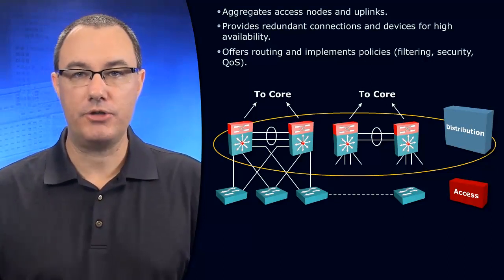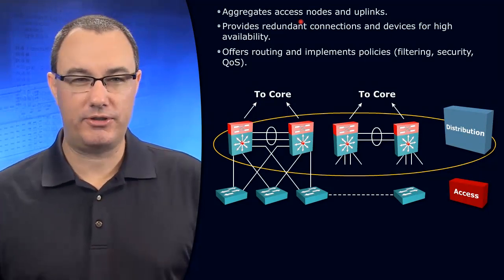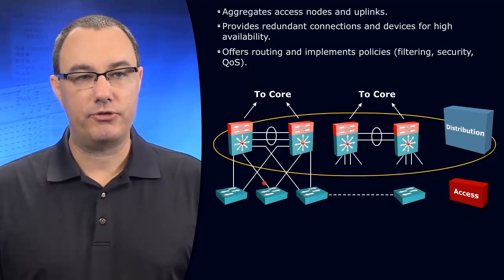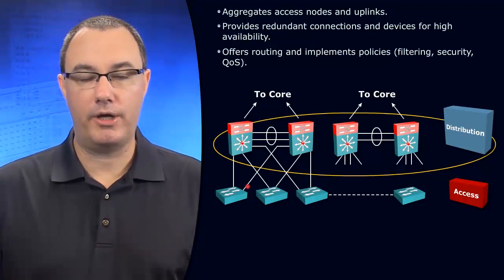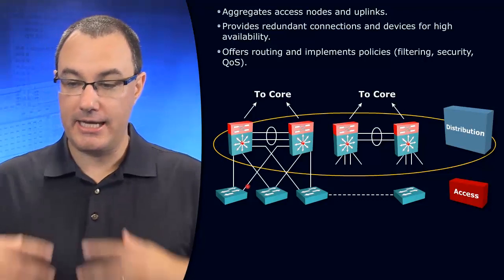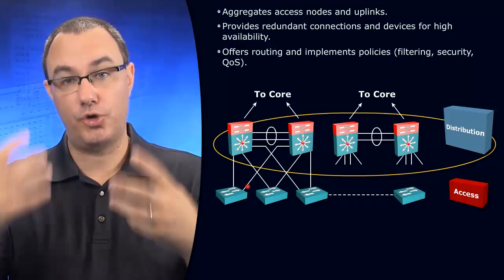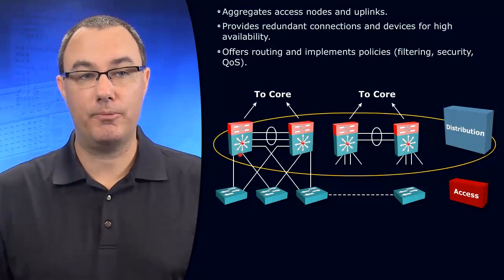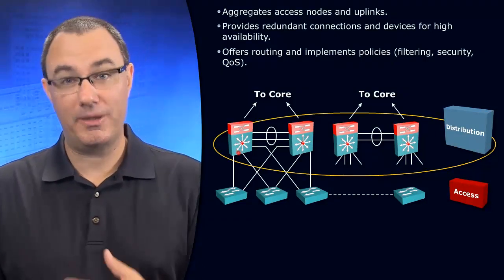When we talk about the distribution layer, it aggregates nodes and uplinks. What does this really mean? It means that we've got our VLANs that run at the access layer - that's a broadcast domain - and that broadcast domain has to terminate somewhere. It terminates on the distribution layer in such a way...